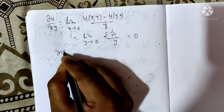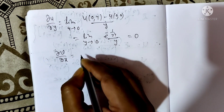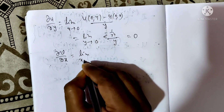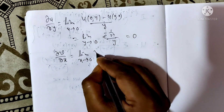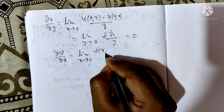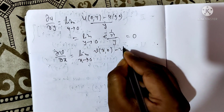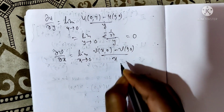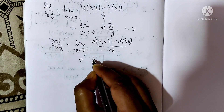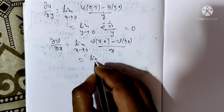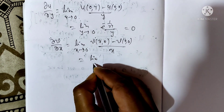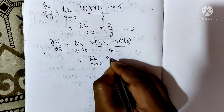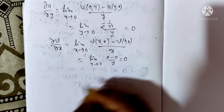∂v/∂x = limit as x→0 of [v(x,0) - v(0,0)] / x = limit as y→0 of (0 - 0) / y = 0.